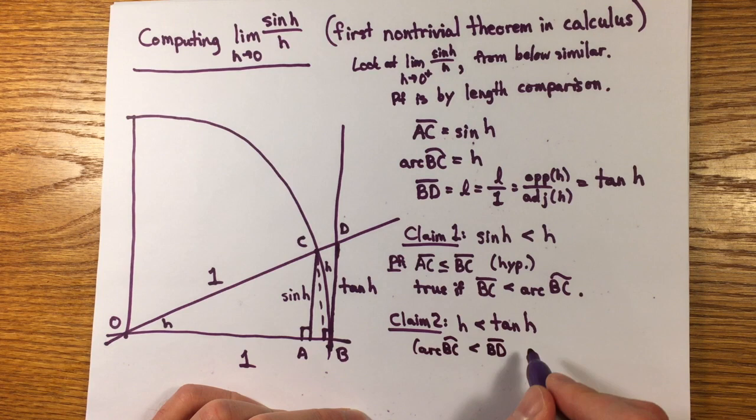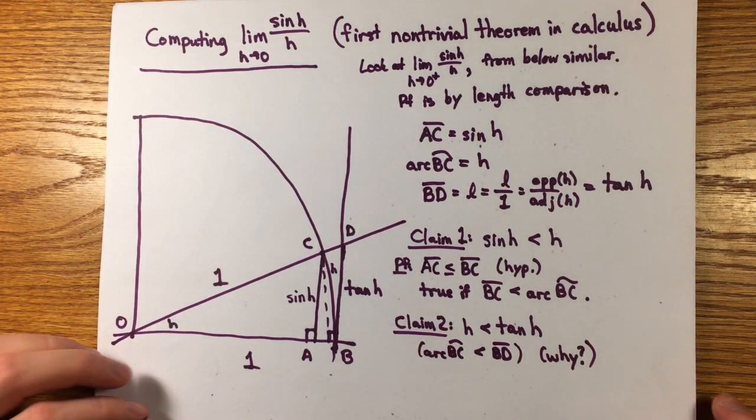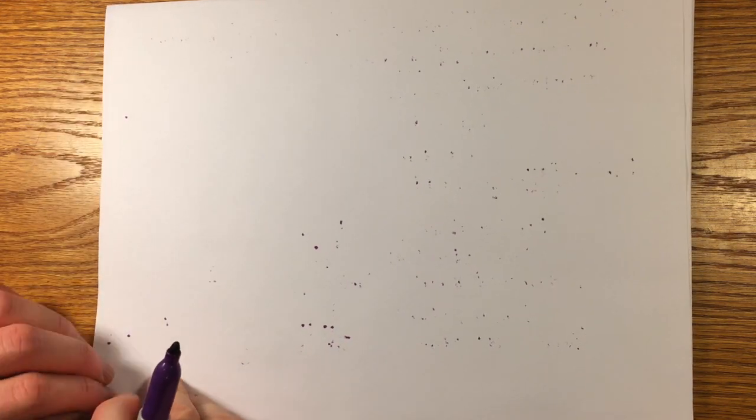Setting that aside, claim 2 is that h is less than tangent of h. That's plausible, but this time it's not so obvious how to show that this is true.